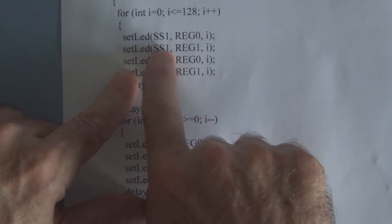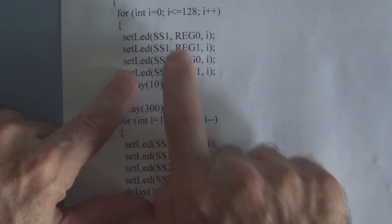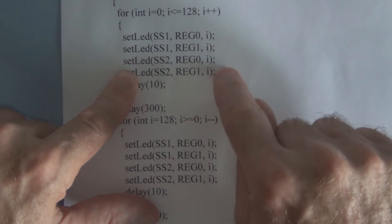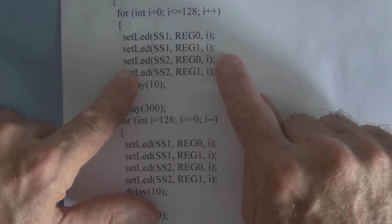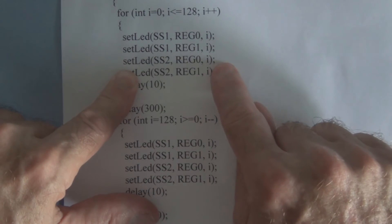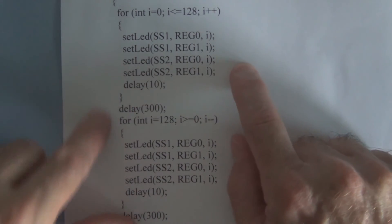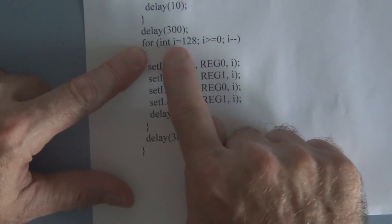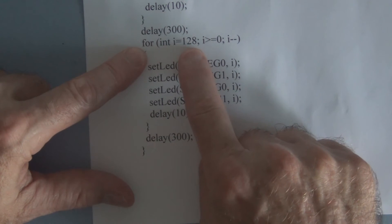Then we have to turn off this chip select and turn on the other chip select by active low. Now we can communicate with register zero or register one and also the two LEDs associated with it, incrementing them slowly, increasing the value so the intensity increases. We have a delay of 10 and then a delay of 300.